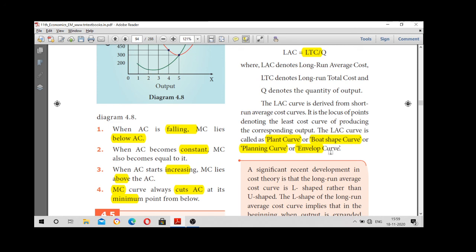So far, we have discussed cost: total cost, fixed cost, variable cost, average fixed cost, average variable cost, and marginal cost, okay?